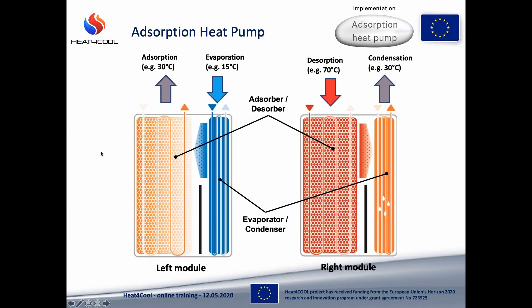First of all we have to replace the glass bulbs with heat exchangers. Then by circulating heat transfer fluid at different temperature levels through these heat exchangers we can warm up or cool down the sorbent, or we can supply or collect the heat from the water. Typically we use pure water as the heat transfer fluid due to its very good thermal properties, but I will use the acronym HTF to distinguish it easily from the refrigerant water.